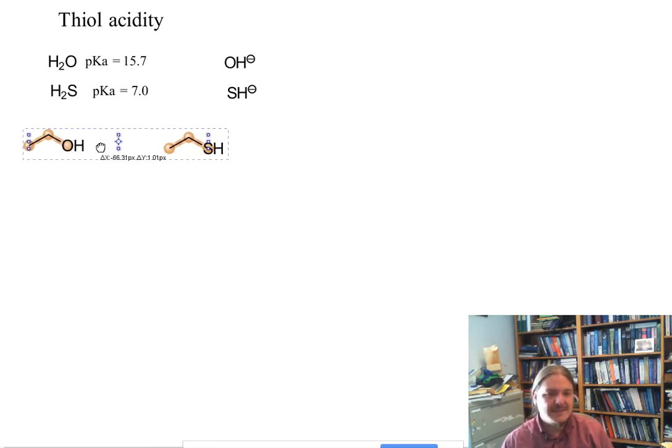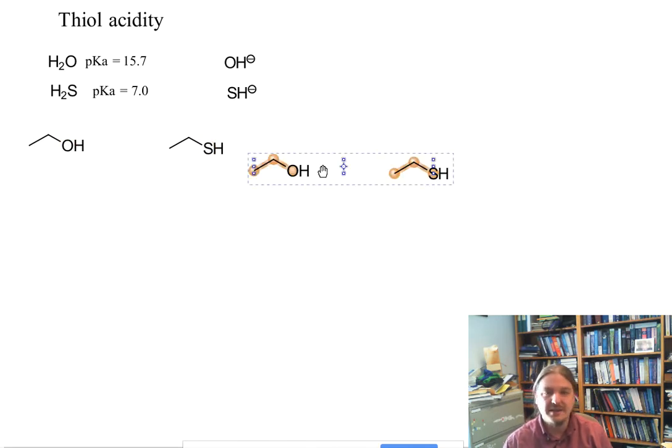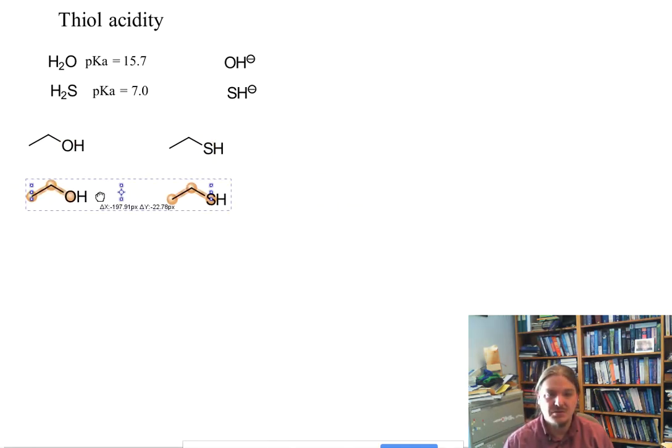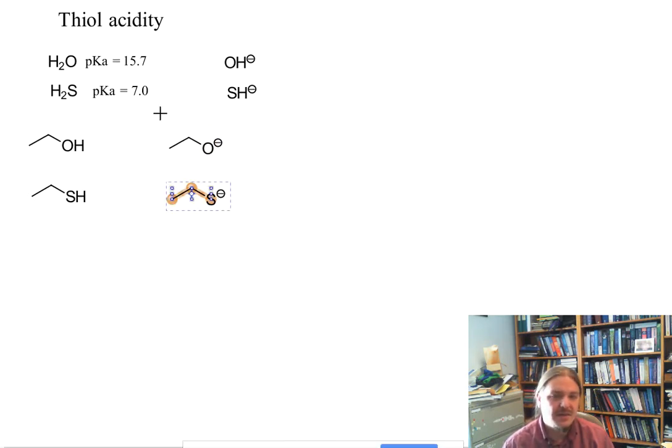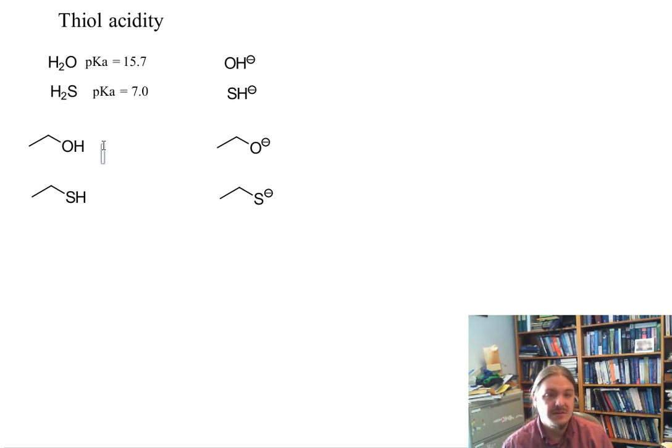We see this same relationship between atom and acidity comparing the structures of alcohols and thiols. Here's ethanol and ethane thiol and their conjugate bases, which other than having an alkyl group instead of a hydrogen, have a lot of structural similarities to water and hydrogen sulfide.